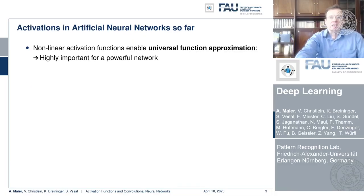In artificial neural networks, activations are non-linear activation functions, mainly motivated by the universal function approximation theorem. If we don't have the non-linearities, we can't get a powerful network. Without the non-linearities, we would just end up with matrix multiplications.